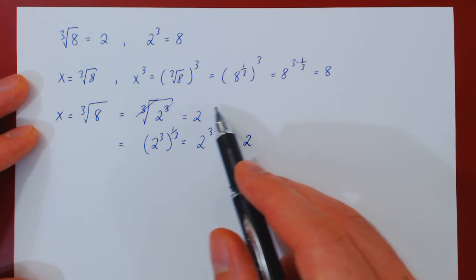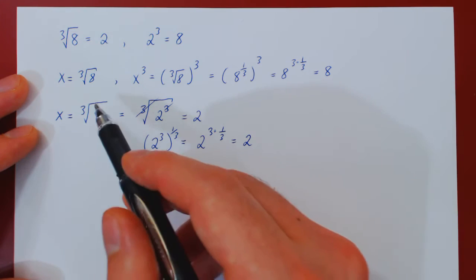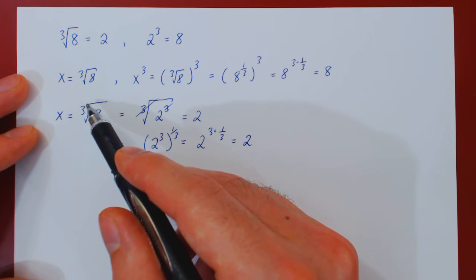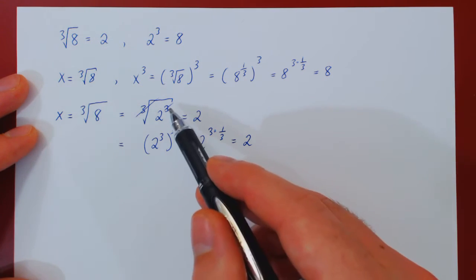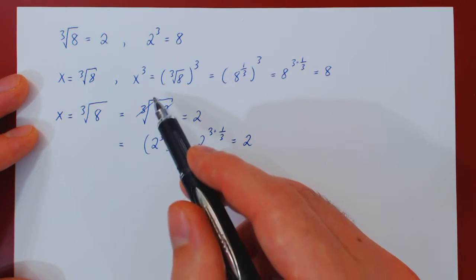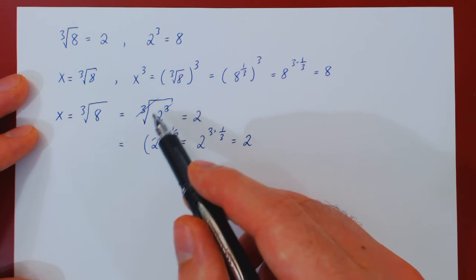But for us, it really is here the simplest way of thinking about this. To hopefully cancel the cube root, what is inside has to be a perfect cube. And then the cube cancels the cube root, and you're left with a given integer.